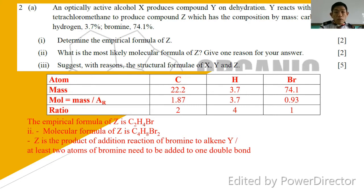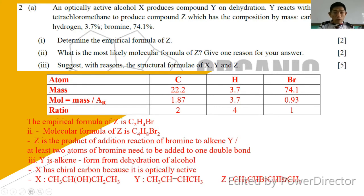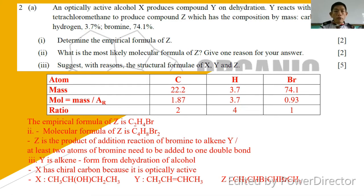Number three: suggest with reason the structural formula for X, Y, and Z. Whenever you see the word 'optically active' highlighted in the question, make sure to mark it. Since the formula is C4, it is suggested that X is butan-2-ol. Then Y will be but-2-ene and Z will be 2,3-dibromobutane. This is how we deduce based on the information given in the question.